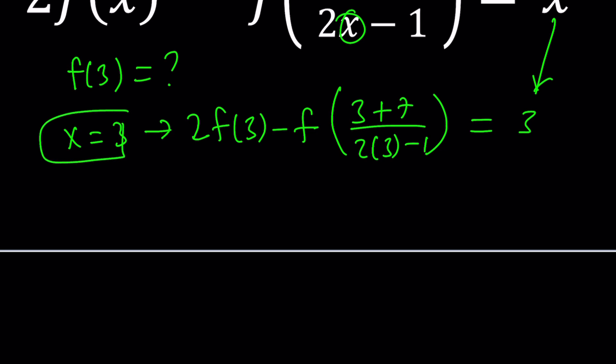Now, if you simplify inside the parentheses, you get 3 plus 7, which is 10. And then 2 times 3, which is 6 minus 1 equals 5. So it's like 10 divided by 5, which is 2. So from here, we get 2, which means 2f of 3 minus f of 2 equals 3.